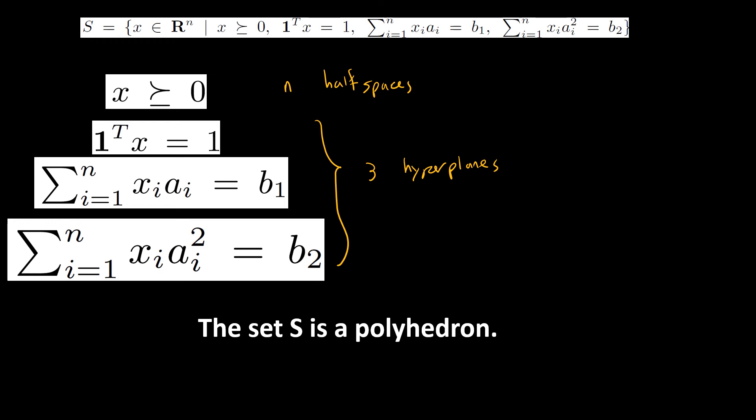Does that show S is a polyhedron? Yes, it does, because we have n half spaces and three hyperplanes. Both n and three are finite numbers. Therefore, we have finitely many hyperplanes and half spaces, which is consistent with the definition of a polyhedron. Hence, the set S is a polyhedron. This finishes up the video.